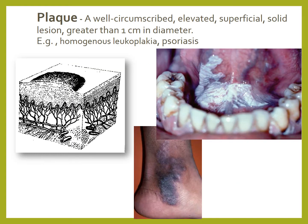A plaque is a well-circumscribed elevated superficial solid lesion greater than 1 cm in diameter. Examples would be homogeneous leukoplakia in the oral cavity or psoriasis of the skin.